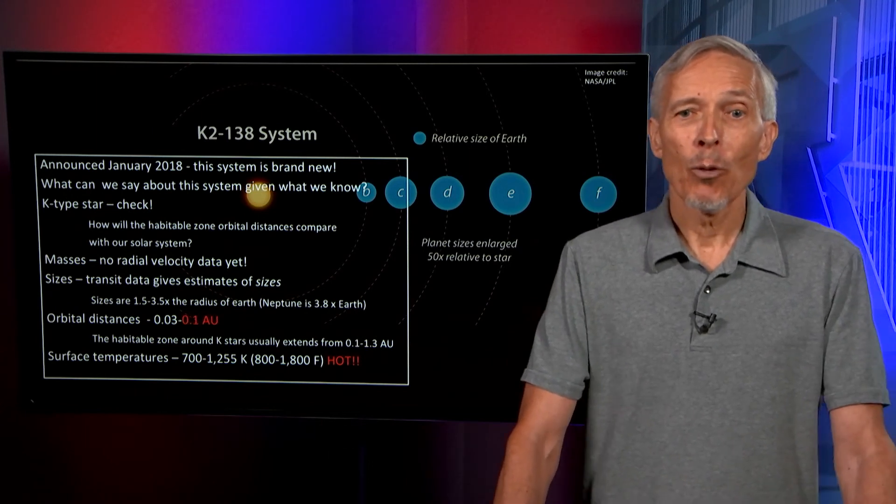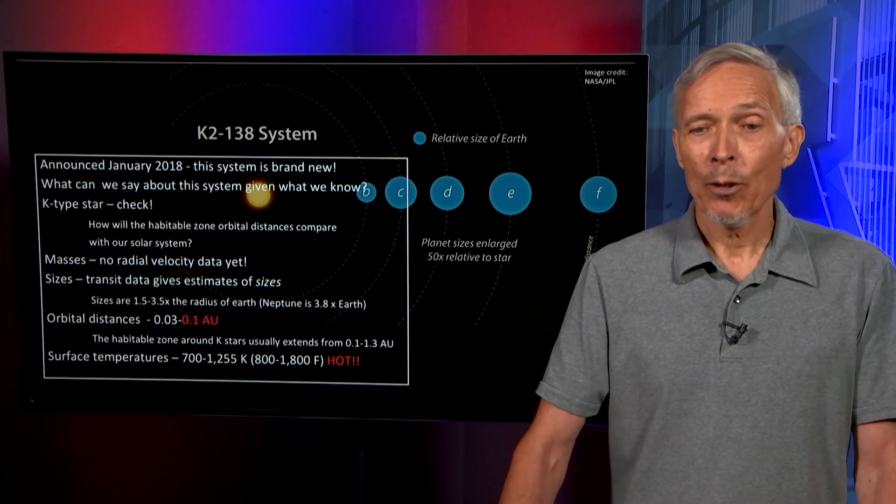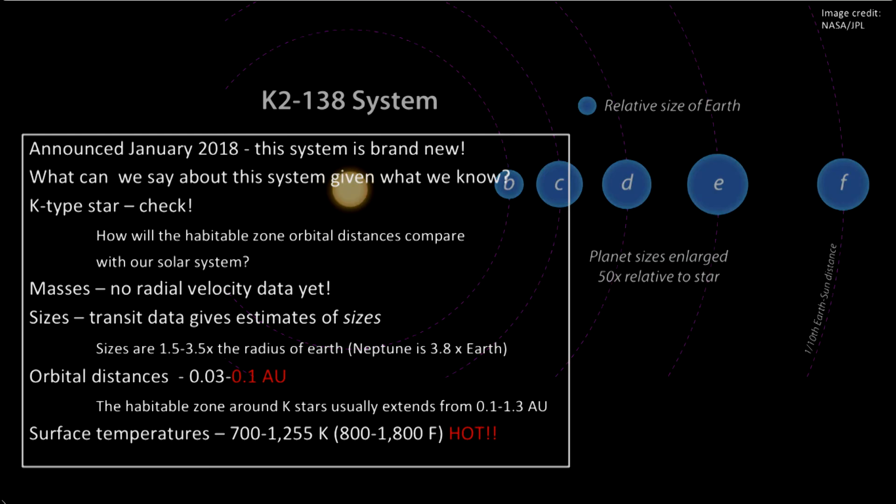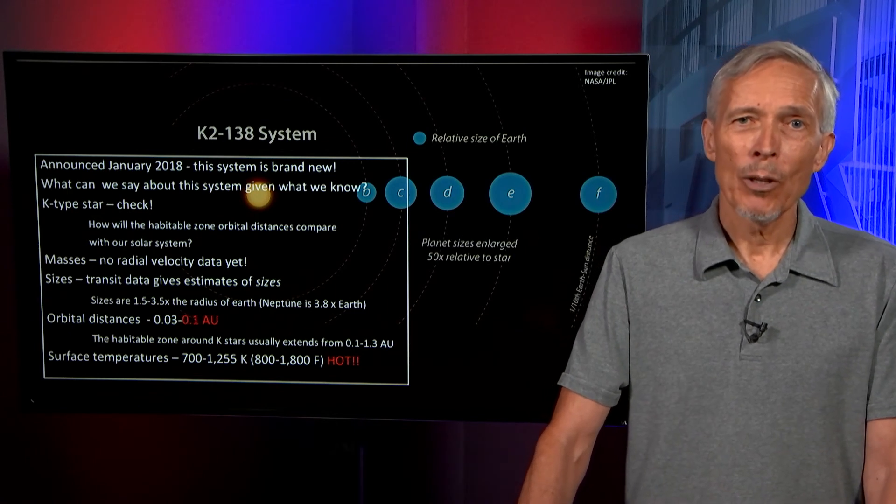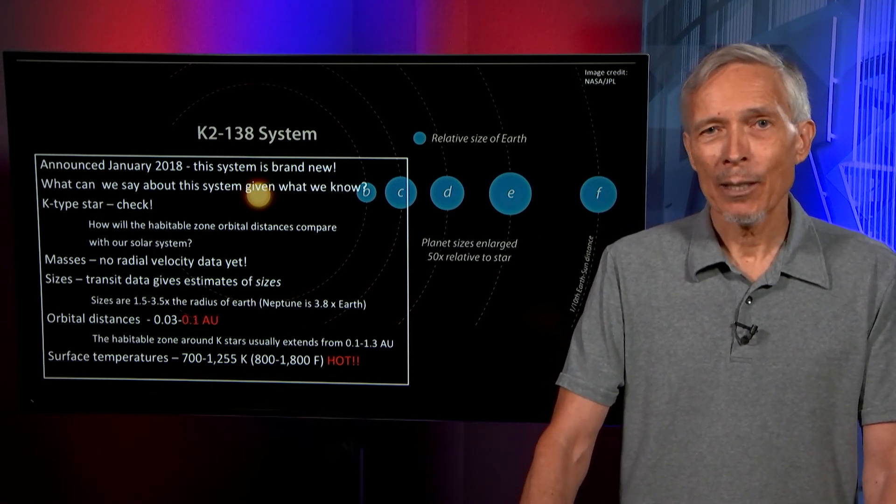The sizes are measured by the transit data, and these sizes are between one and a half and three and a half times the radius of the Earth. For comparison, Neptune is 3.8 times the size of the Earth. So these are almost Neptune-like objects and may have significant gaseous envelopes. The orbital distances are between three-hundredths and a tenth of an astronomical unit, whereas the habitable zone around a K-star usually extends from 0.1 AU to 1.3 AU. So these surface temperatures on this system are extremely hot, 800 to 1800 degrees Fahrenheit. So even though it is a feeble red dwarf star, in this situation the multiple planets appear to be uninhabitable.